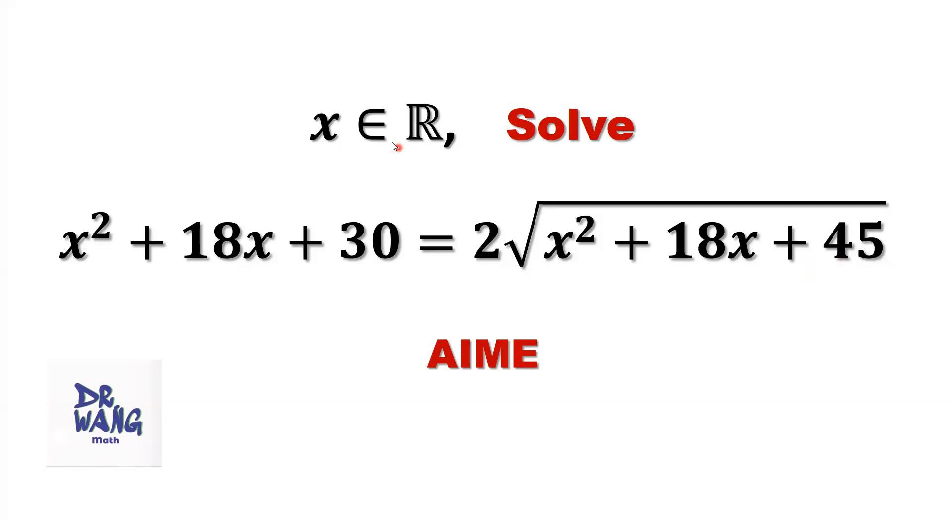We only need real solutions. In general, what we should do is square both sides to get rid of the root sign from the right-hand side.